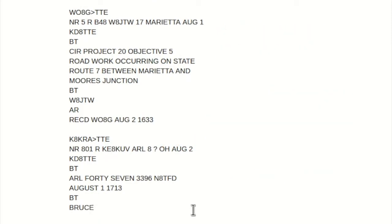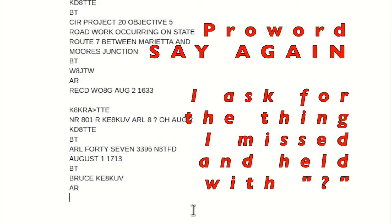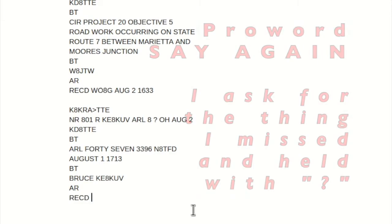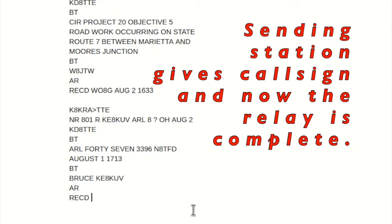Bruce, I spell Bravo Romeo Uniform Charlie Echo. Amateur call Kilo Echo 8 Kilo Uniform Victor, no more. Say again place of origin, over. Place of origin Cincinnati, Ohio. Roger, 8-0-1, thank you, KD-8 T-T-E. Thank you, Matt, K-A-K-R-A, back to Matt.